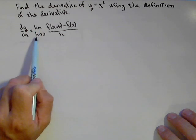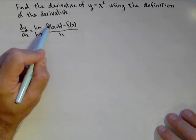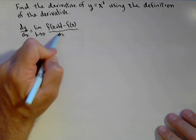Now this is the definition of the derivative: dy/dx equals the limit as h goes to zero of f of x plus h minus f of x over h.